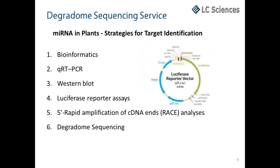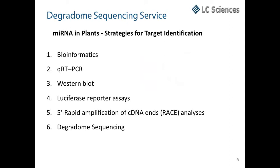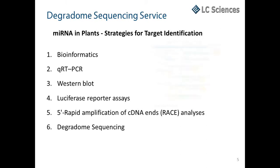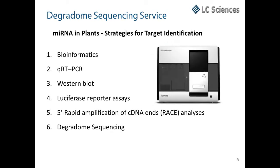Luciferase reporter assays have also been successfully used, but they are labor-intensive, dependent on the region chosen for cloning, and can be sensitive to variances in protocol such as the method of transfection. Five-prime RACE analysis is also effective, but it is limited by the fact that it is gene-specific. That leaves degradome sequencing as the most effective transcriptome-wide method of efficiently and accurately determining microRNA targets in plants.